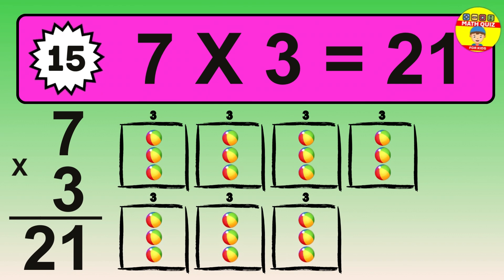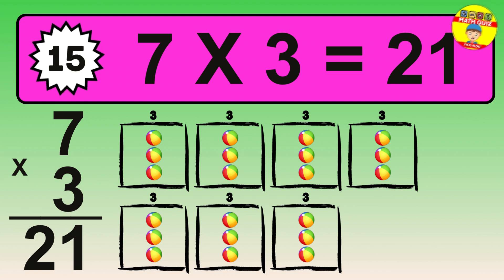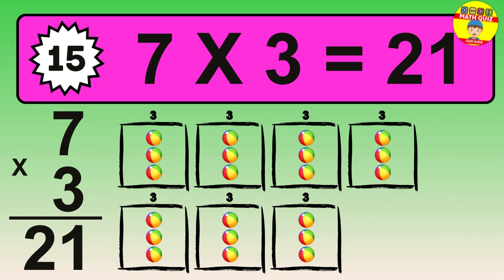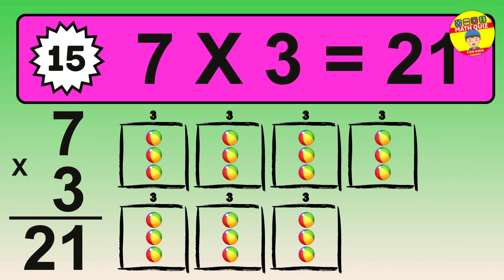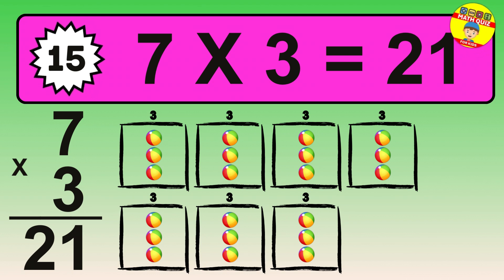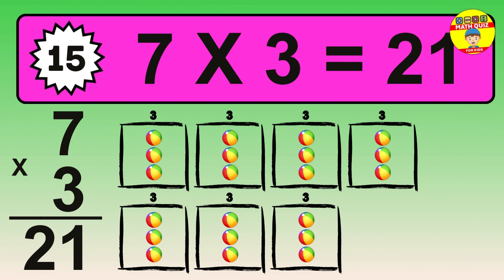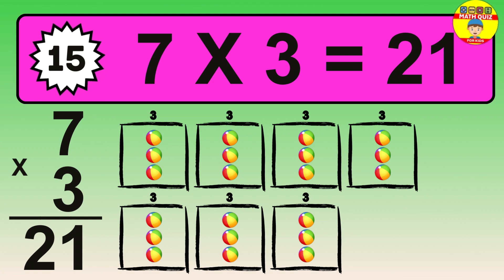To calculate, we have 7 groups with 3 balls each one. So, how many balls do we have? 21 balls.